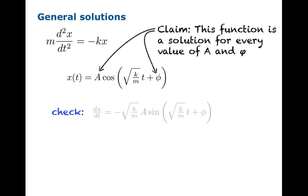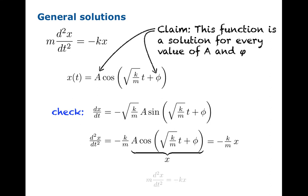So the verification is similar. We're just going to take two derivatives this time. And we'll notice that the underlying quantity here is precisely what we called x to begin with. So, in fact, the second derivative of x with respect to t is negative k over m x. And if we multiply both sides by m, we recover the original equation.